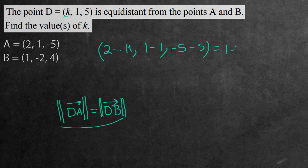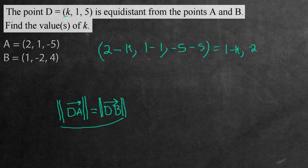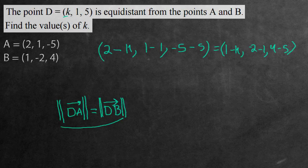And it's supposed to be equal to the other directed line segment from D to B. So doing the same thing, we have 1 subtract K, comma, negative 2 subtract 1, and 4 subtract 5. So we have both of our directed line segments, D to A and D to B. And now we just have to find the length of them.